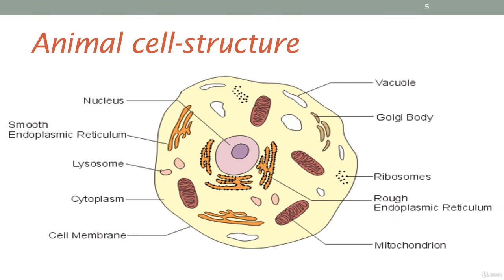On this slide, we have a typical animal cell. The main structures that you should be able to identify are the nucleus, the endoplasmic reticulum, the cytoplasm, the cell membrane, the mitochondrion, the ribosomes, and the vacuole.